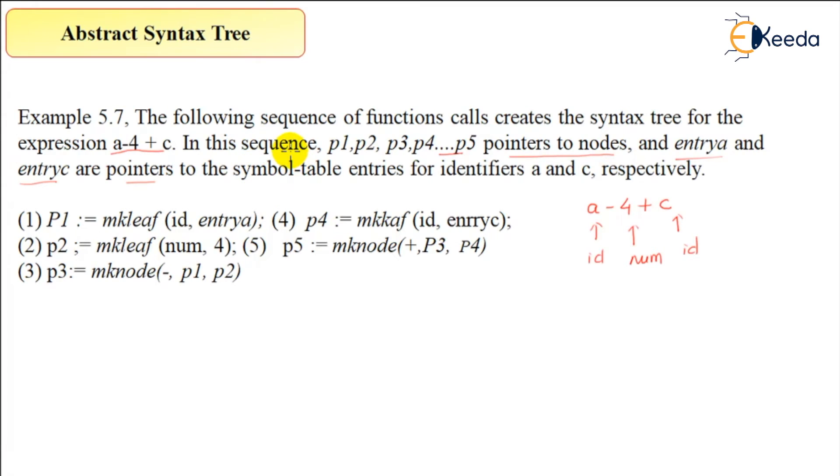So what is this makeleaf with id and entry_a? This will create a node with a and point to the symbol table with entry_a. Second is makeleaf with number 4, so this is your number 4 with label num.